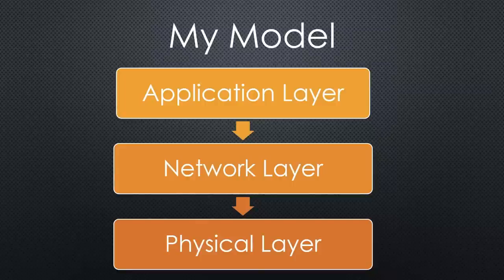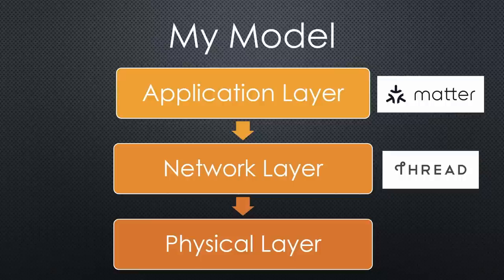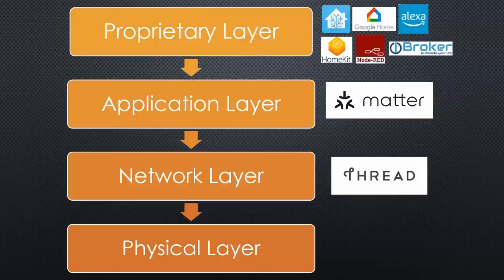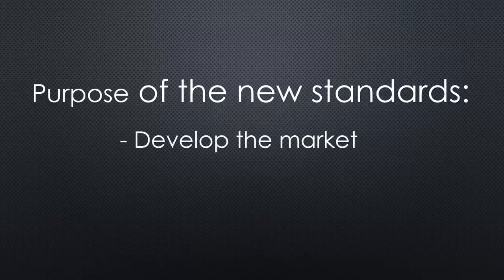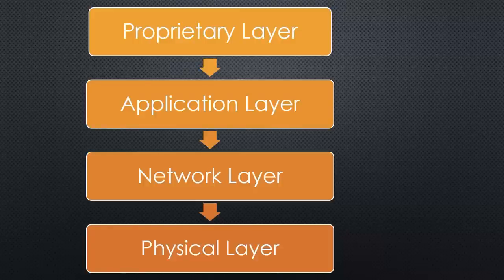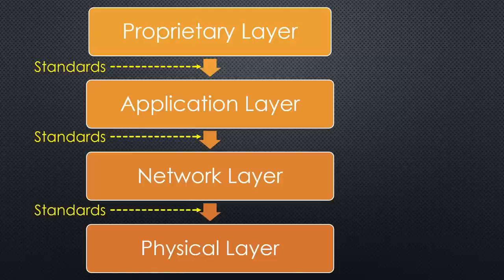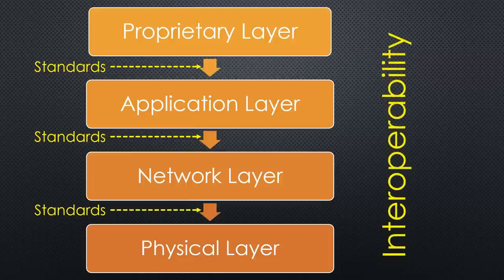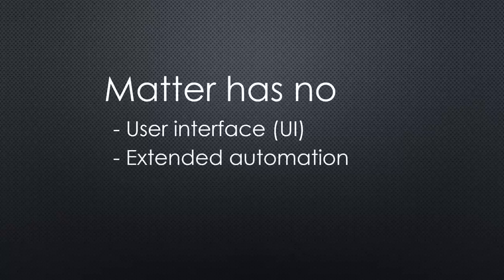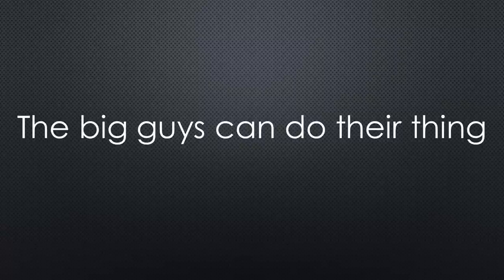In our architecture, we place Matter in the top layer and Thread in the middle layer. But we already had the application layer occupied by the proprietary apps, so we add a proprietary layer on top. We know these new standards' purpose: to develop the market and bring the major players back to where they think they belong. But we can also profit, because architectures only work if the interfaces between the layers are defined and stable — this is called interoperability. Matter does not offer a UI or extended automation, which is good for everybody.